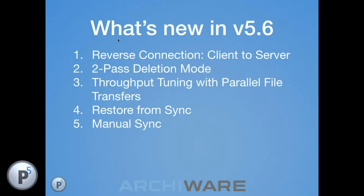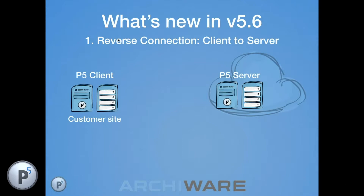Feature 1 is called Reverse Connection — client to server. The scenario: you've got a P5 server in a cloud location and you want to replicate data from client offices into your cloud storage. Client locations are generally protected from incoming TCP/IP connections by a firewall, which makes direct server-initiated connections difficult or impossible to configure.